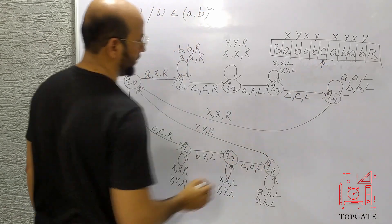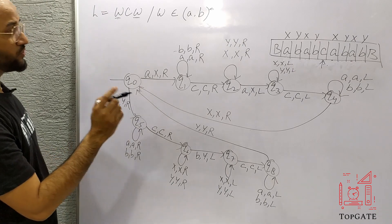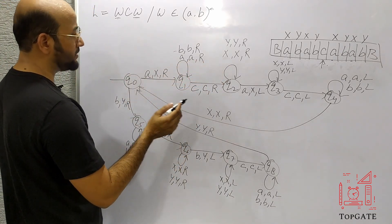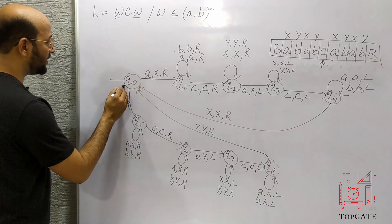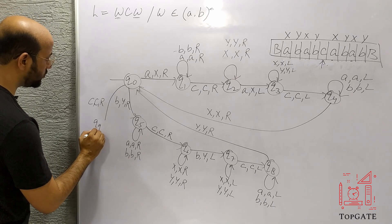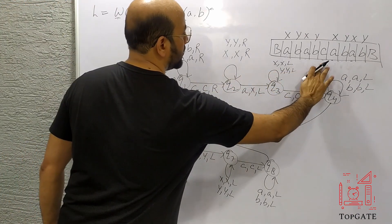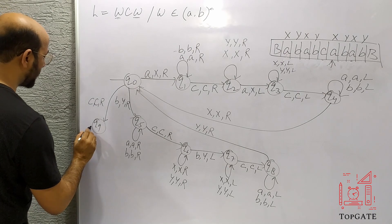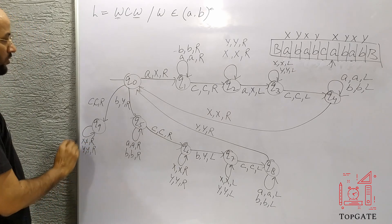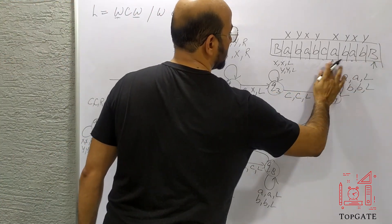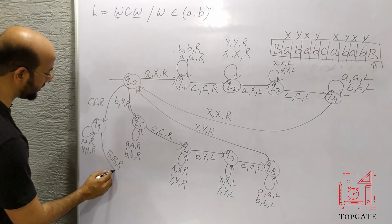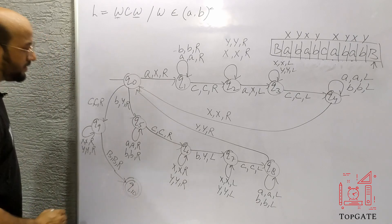The machine is at Q0. At Q0 I don't have a move for C yet, but now there is no A or B left — finding C means everything has been matched. So I take a move for C: keep it as C go right to state Q9. The pointer will now point to this X, and I find several X's and Y's — take a self loop: X comma X comma R; Y comma Y comma R. All X's and Y's are skipped and the pointer will point to the blank B. Take a move for blank: go right to state Q10, make it the final state, and we are done.